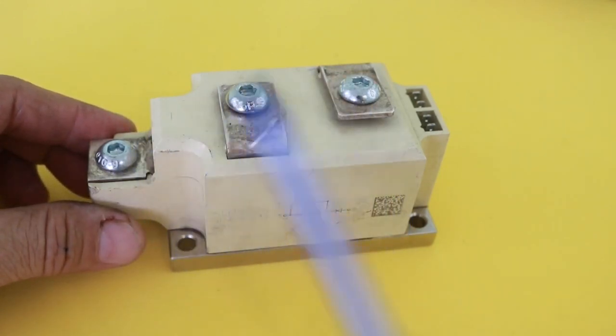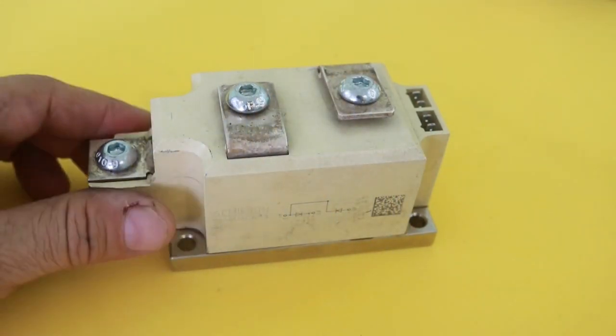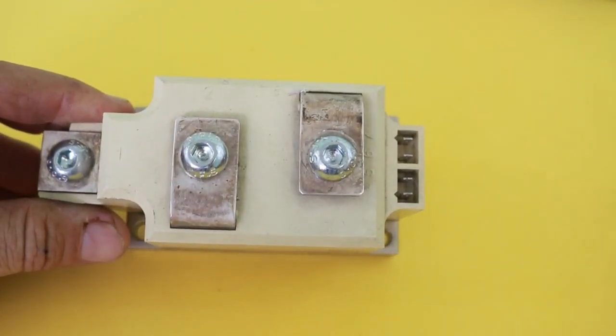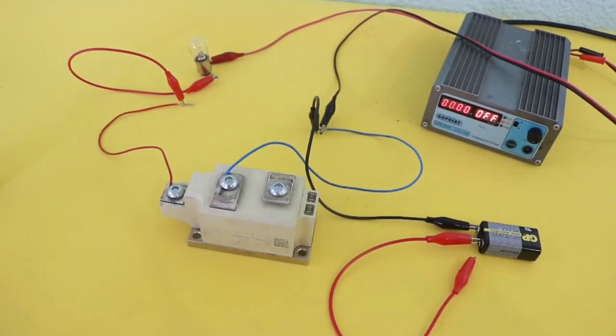Here we have the connections for the anode and cathodes, and here we have the connections for the gates. Okay, let's test it.